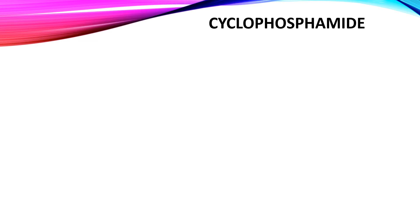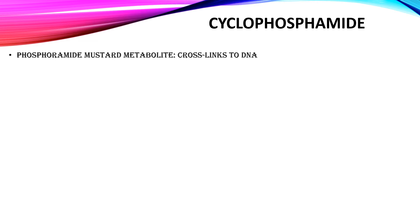Now let's talk about cyclophosphamide. Cyclophosphamide is a DNA cross-linker. When metabolized in our body, it forms a phosphoramide mustard metabolite that cross-links or attaches to DNA structure and inhibits its synthesis, hence prohibiting cell function and proliferation. However, cyclophosphamide needs to be activated by an enzyme called P450 to be functional, and I will explain later why this is important.